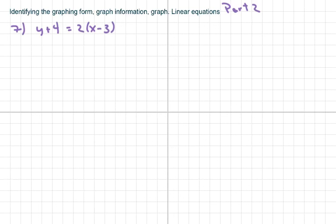Hi everyone. We're continuing our linear equations by identifying the graphing form and graphing information, and then we're going to graph. These are linear equations. This one — the graphing form is point-slope form.